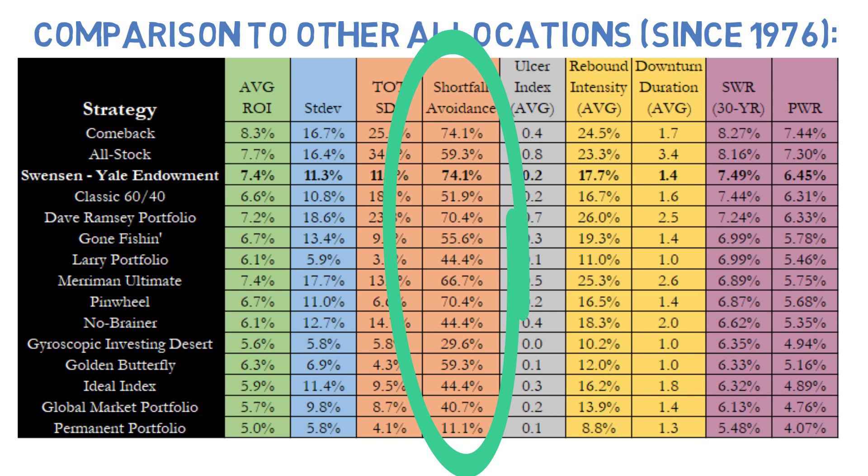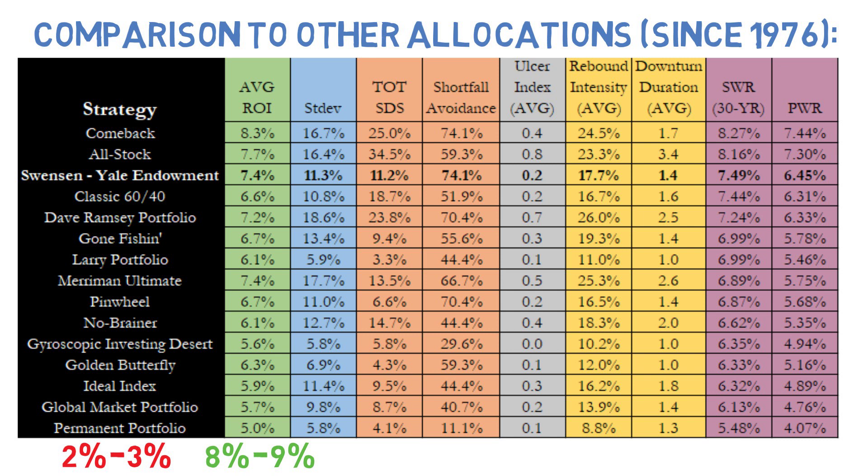For reference, since 1985, inflation has averaged somewhere between 2-3% per year, so an inflation-adjusted 6% return would mean nominal growth of roughly 8-9% per year. The Swenson portfolio hits this mark in nearly 75% of the available 10-year periods, and it did this while being more consistent, more dependable, and more tranquil than other typically higher growth allocations like the All-Stock and Comeback portfolios.